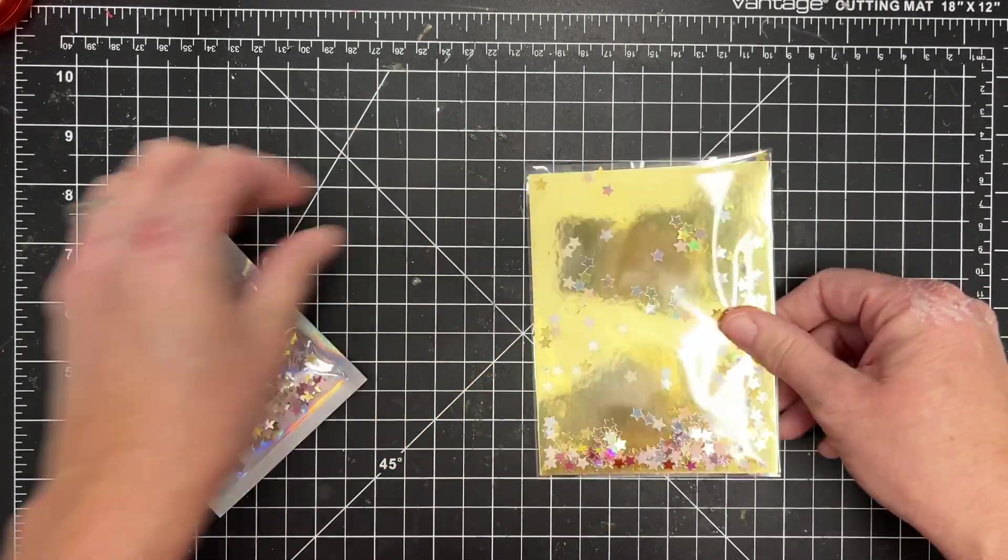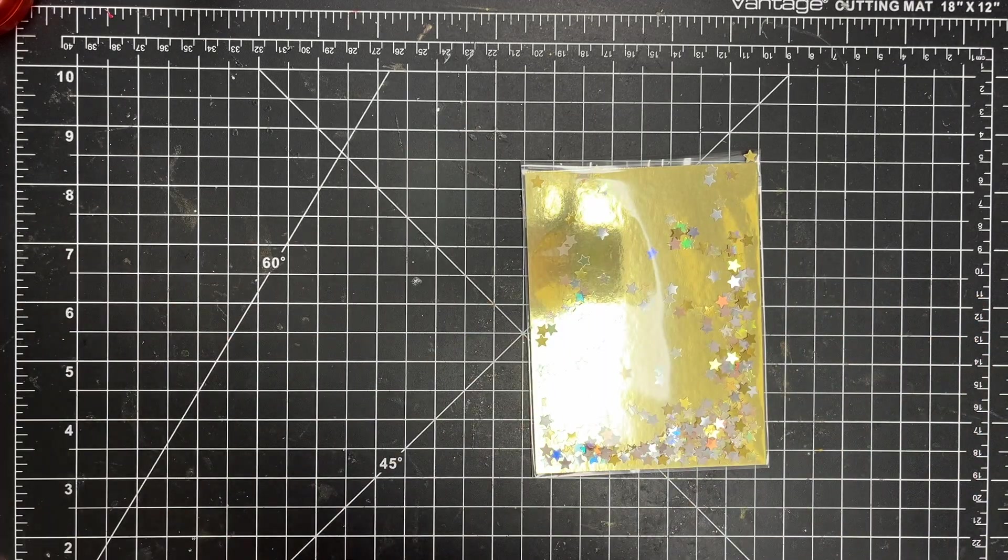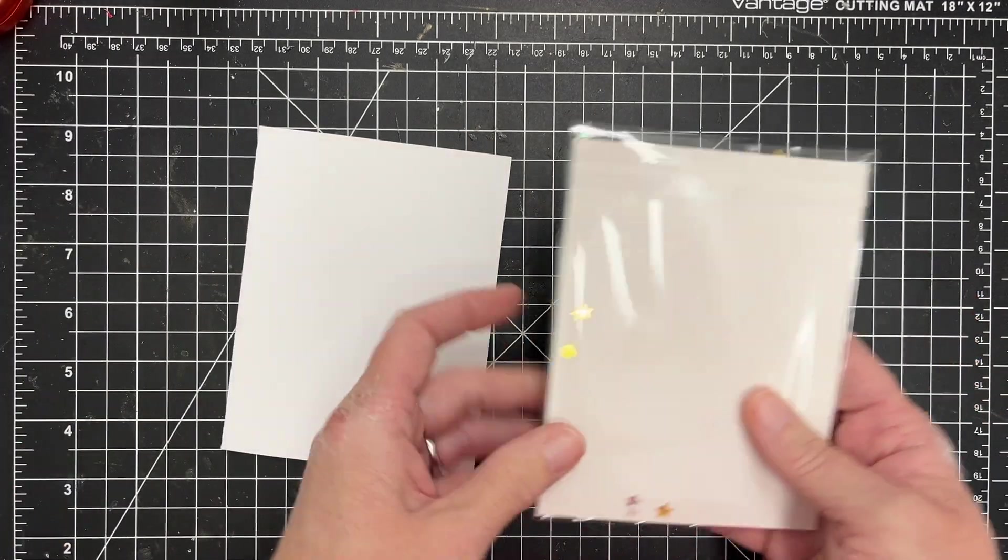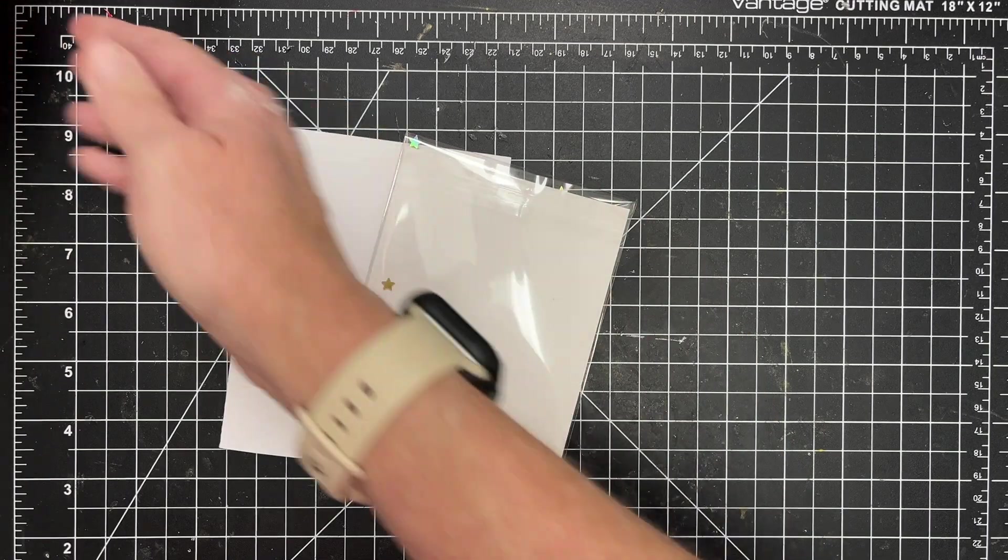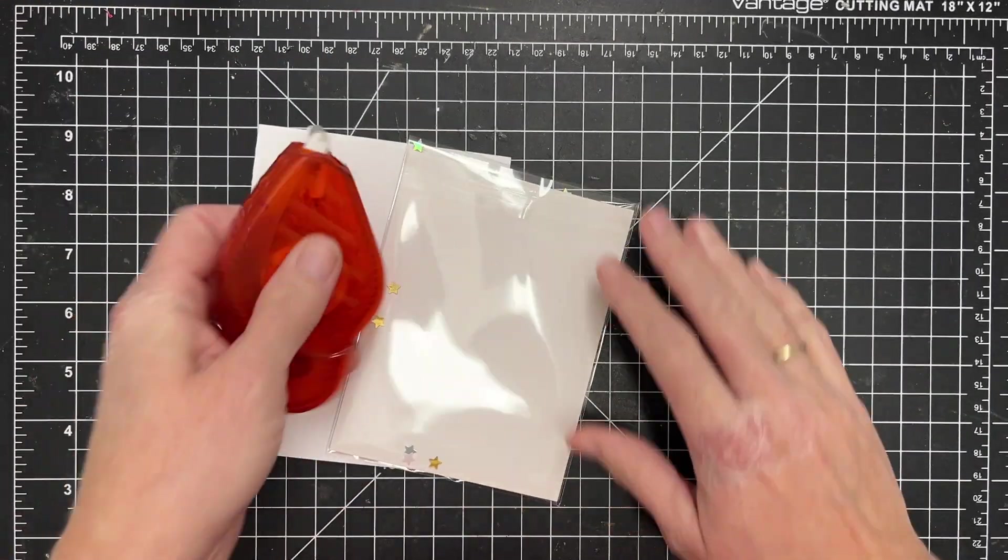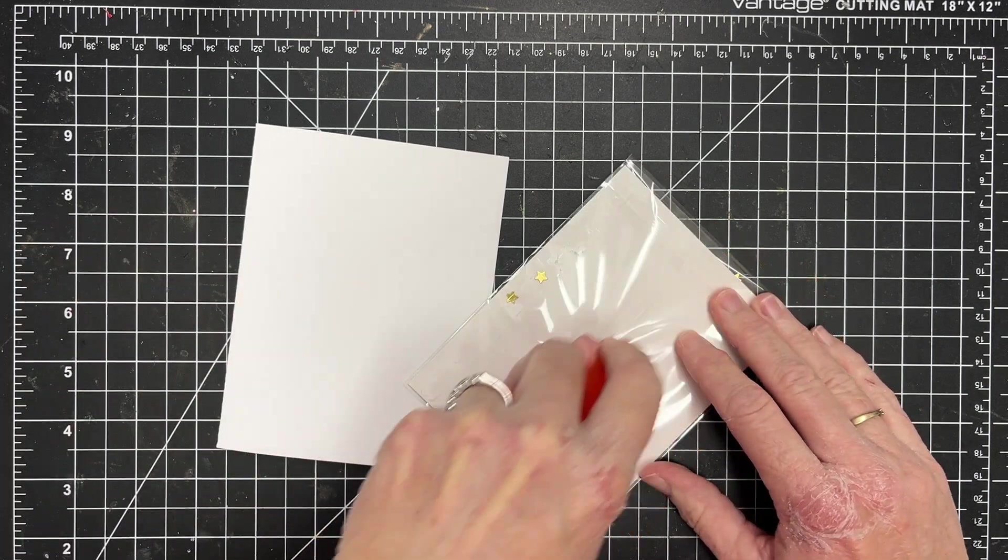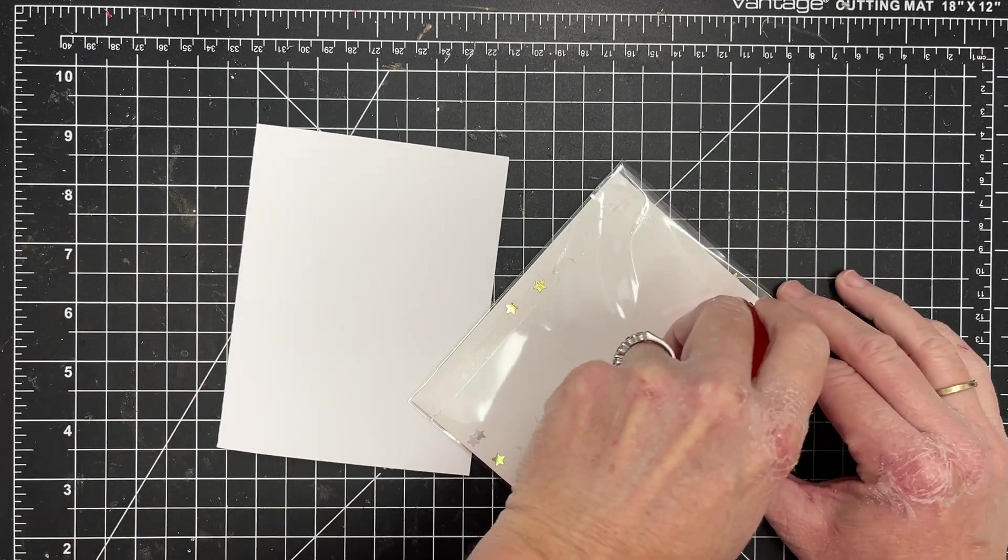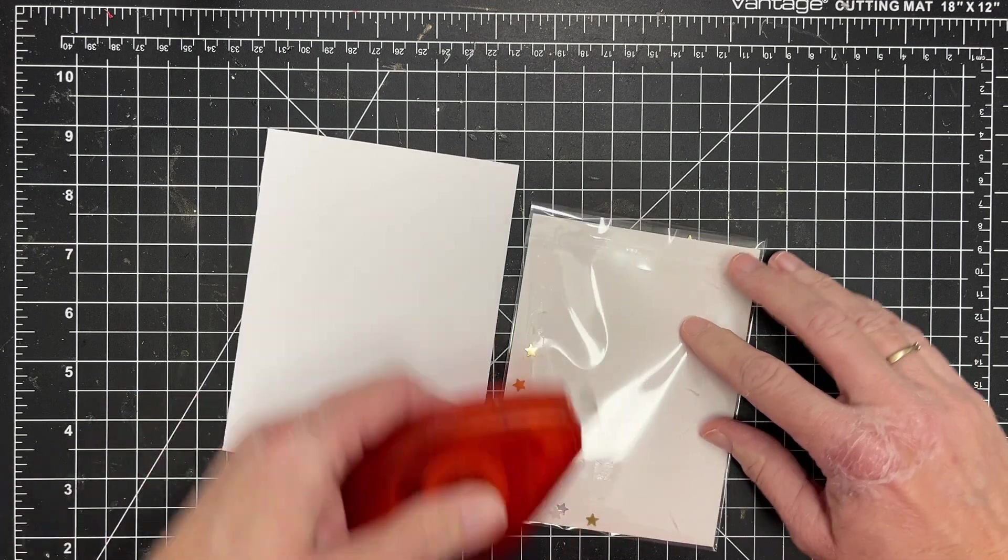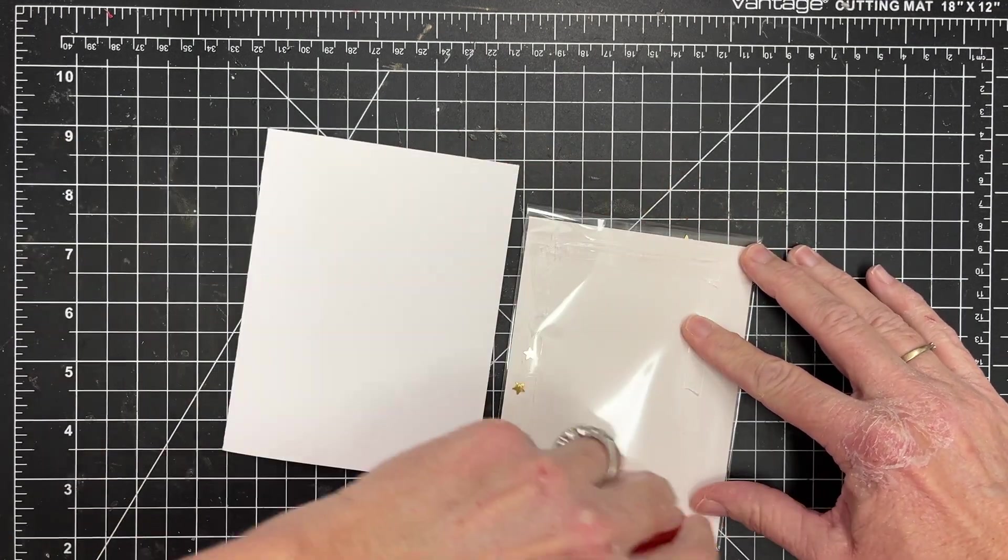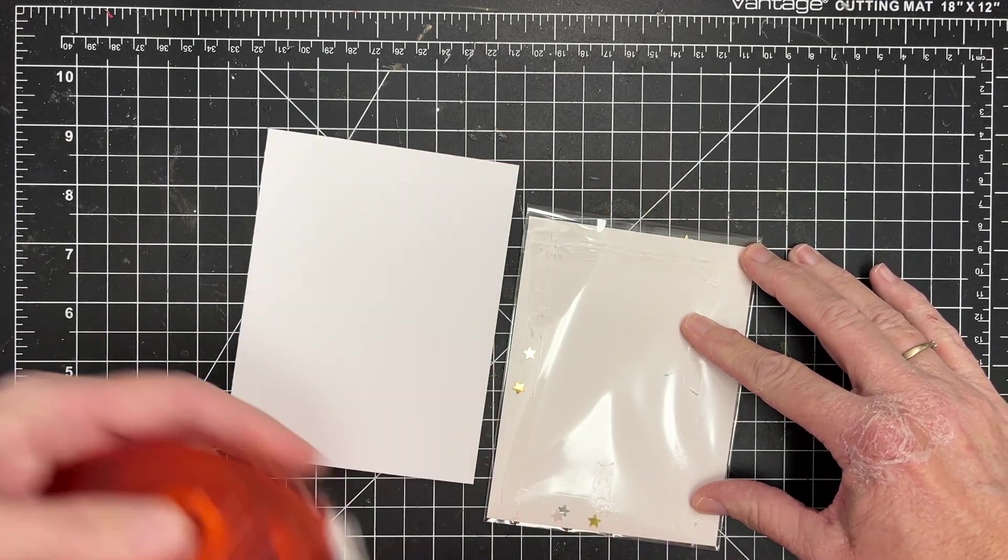I'm going to add this to a card base, an A2 size card base. I'm just sticking with white. I am going to use obviously a dry adhesive here. I use liquid adhesive a lot on my cards, but not on this because I need for that adhesive to adhere. So I'm just running this down and I will place this onto my card.